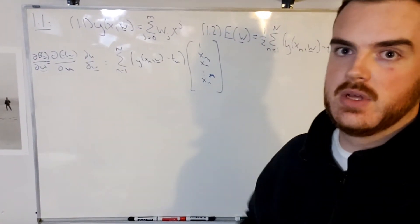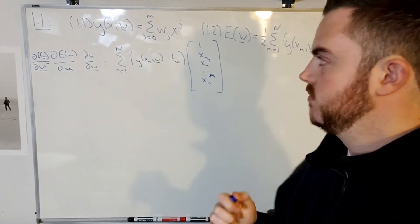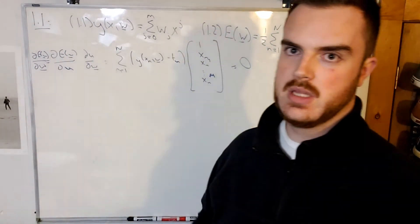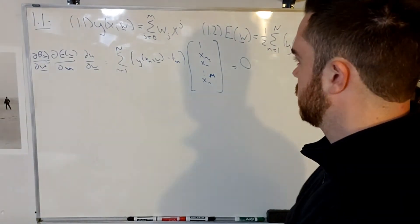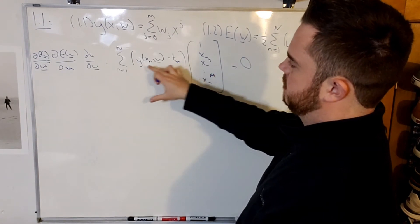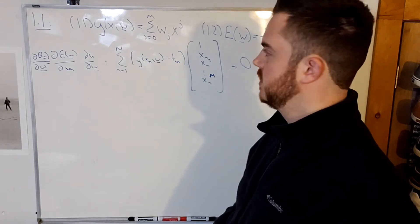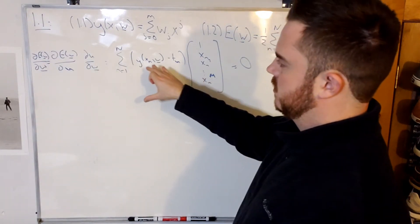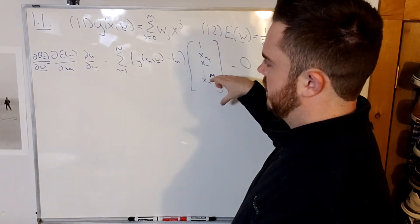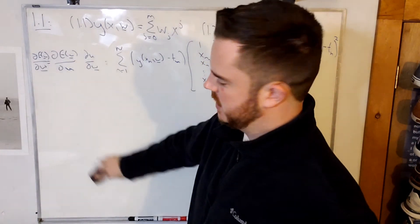That's what we have for the gradient of E with respect to w. We set this equal to zero to find the w vector that minimizes the error function. If we multiply out and distribute that term, we'll have y times the x vector minus t times the x vector equals zero, and we can move the t to the other side.